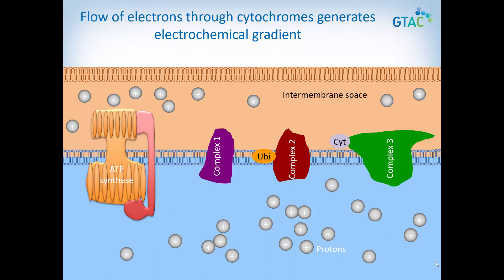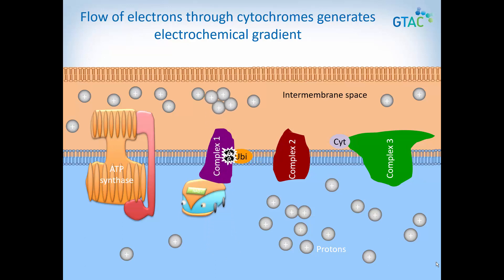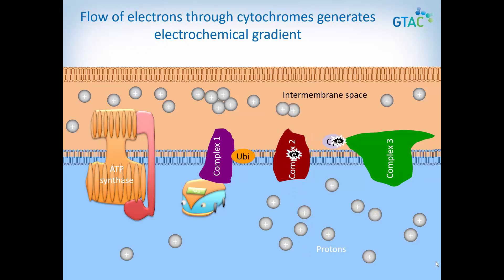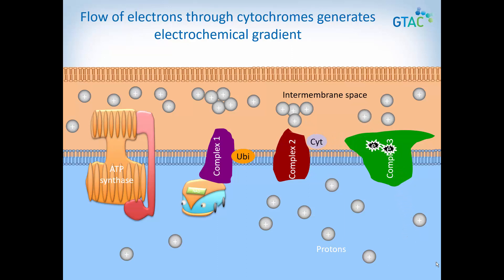First, we will model how the flow of electrons through the electron transport chain generates an electrochemical gradient. NADH drops off its excited electrons at the first protein in the electron transport chain. The electrons start to flow through the proteins, supplying energy to pump protons across the inner membrane into the intermembrane space. This energy helps the protons keep moving into the intermembrane space even when it is getting crowded. The protons keep being pumped from an area of low concentration in the matrix to an area of high concentration in the intermembrane space. NADH then moves off to pick up a new load of electrons from the Krebs cycle. Pause the video here so you can model this on your poster.